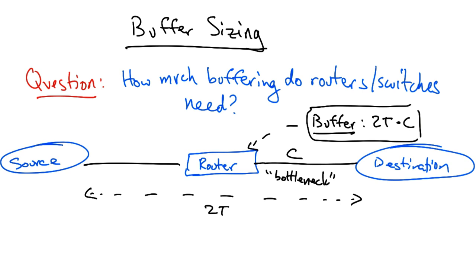Now this rule of thumb guideline was mandated in many backbone and edge routers for many years. It appears in RFCs and IETF architectural guidelines, and it has major consequences for router design simply because this can be a lot of router memory, and memory can be expensive.